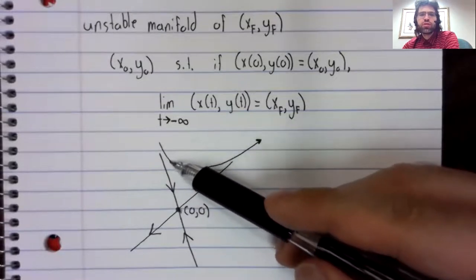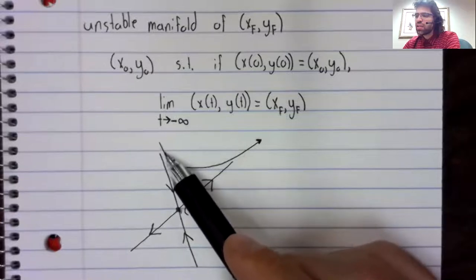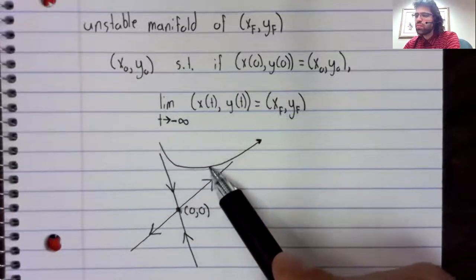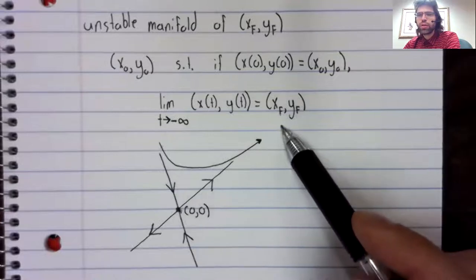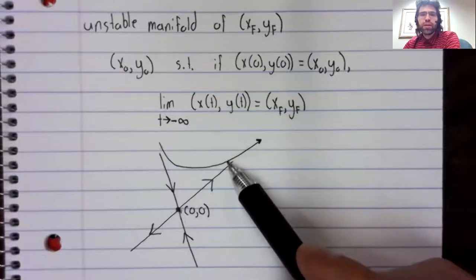The saddle is unstable, and yet its unstable manifold is quite small. If you look at points on this trajectory, as time passes, these points move away from the origin, but they're not on the unstable manifold.